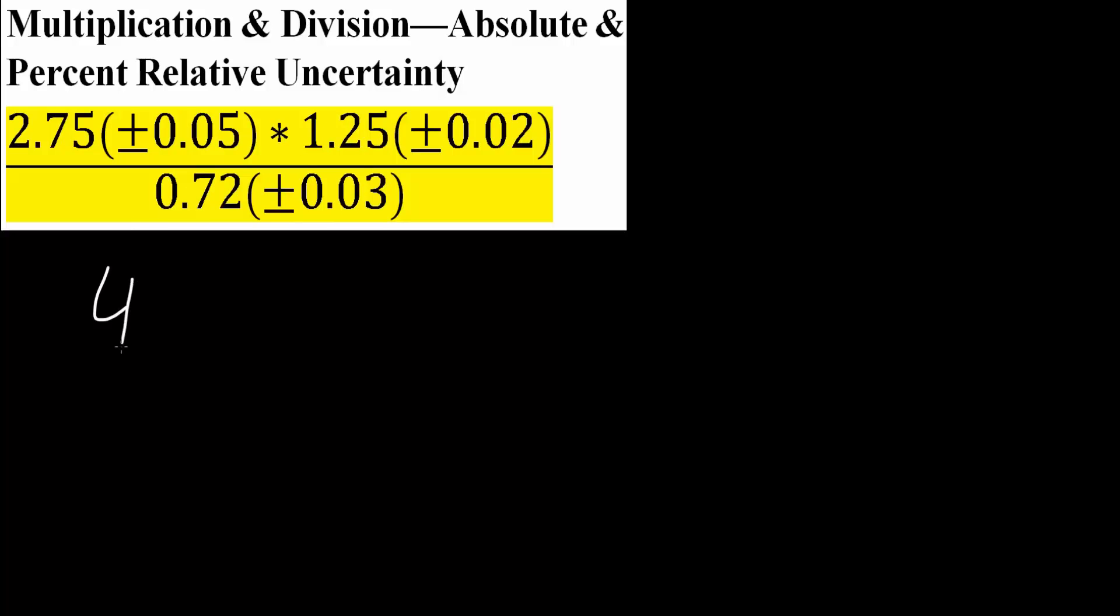We would get 4.77. Next, we want to get the absolute uncertainty and also the percent relative uncertainty. For multiplication and division, the first step is getting the percent relative uncertainty. This is unlike addition and subtraction, which was the last video. So first, we will get the percent relative uncertainty.